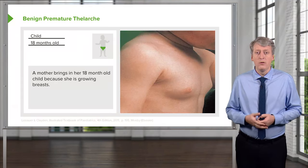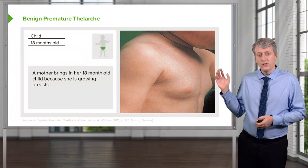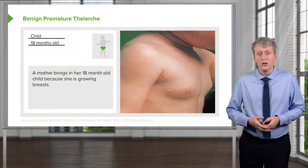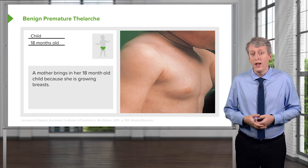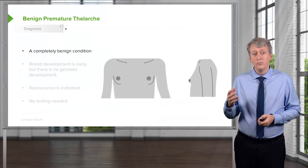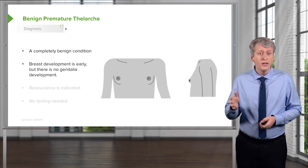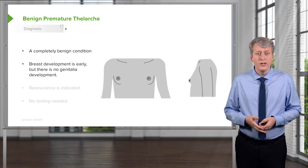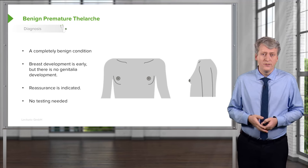Here is an example of a child with benign premature thelarche. You can see the breasts are starting to develop but this child has no other sequelae of puberty. It is a completely benign condition. Breast development is early, there is no genitalia development, and reassurance is indicated — no testing is needed.